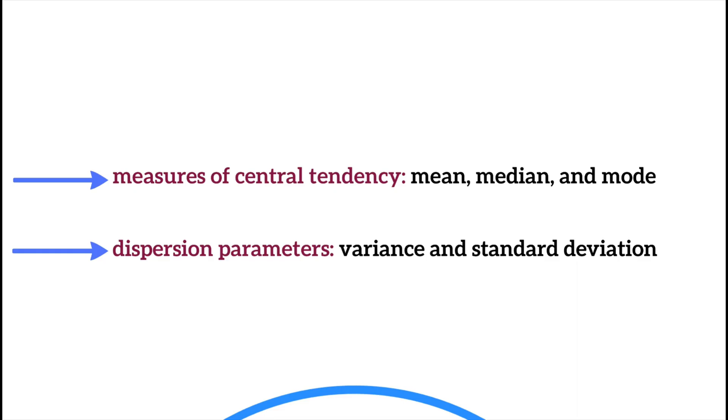indicate the position of values in a statistical series, the dispersion parameters are used to examine the spread of individual values around the mean. The dispersion parameters include variance and standard deviation.